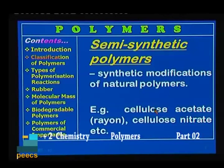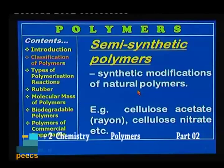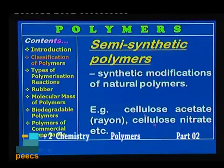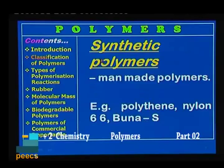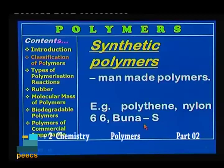What are semi-synthetic polymers? Semi means half — they are not completely synthetic. These are synthetic modifications of natural polymers. Examples are cellulose acetate, usually called rayon, and cellulose nitrate. Synthetic polymers are man-made polymers; they are completely artificial. Examples are polythene, nylon 6-6, and Buna-S.